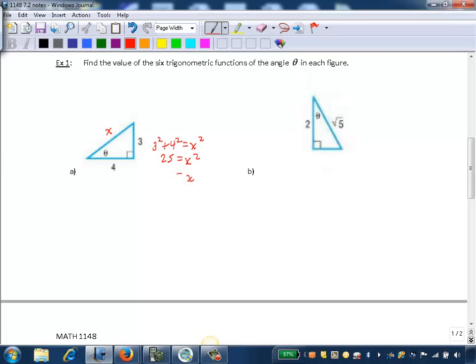If we take the square root of both sides, we know x has to be 5. It can't be negative 5 because it's the length of a side. So this is 5.